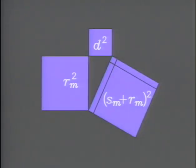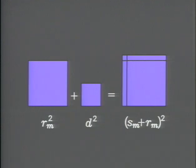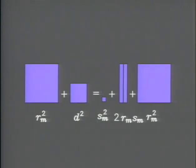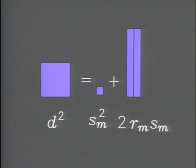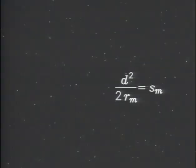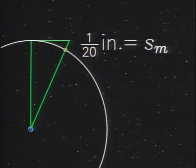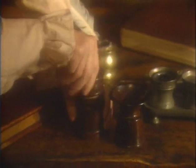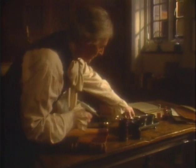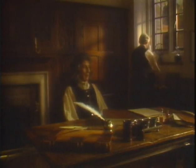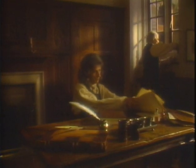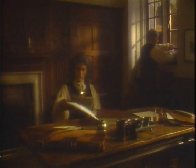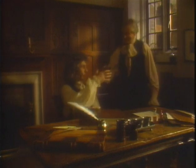By the Pythagorean theorem, rm squared plus d squared equals the sum of rm and sm, squared. So d squared equals 2·rm·sm plus sm squared — a quantity so small it's safe to ignore. Given the size of rm and d, sm is one-twentieth of an inch. For the world at large, how enormous that one-twentieth of an inch would turn out to be. That bodies would fall forever under the influence of gravity had been proved by an astounding agreement between theory and observation. Yet marvelous as the secret was, another 20 years would pass before Newton would share it with the world. Nonetheless, at that moment and with that result — that one-twentieth of an inch — Newton knew that he held in his hands the key to the mechanical universe.